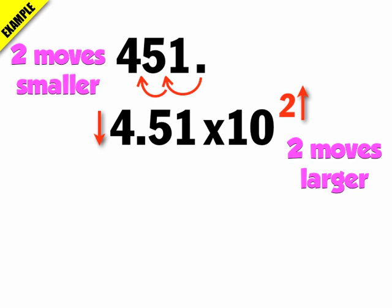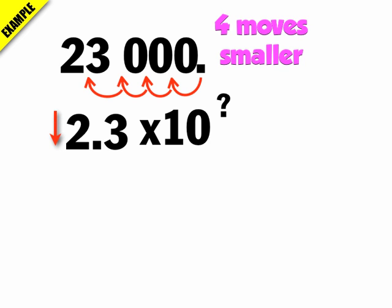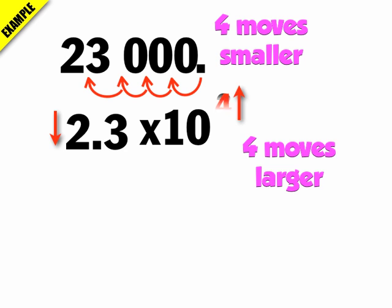Whatever happens to the mantissa, the exponent does the opposite. For 23,000: put my decimal point at the end, and I want to get to 2.3 times 10 to the something. I move the decimal four times to the left — that's four powers of 10 smaller for the mantissa, which means the exponent is four powers of 10 larger. So that becomes 2.3 times 10 to the fourth.